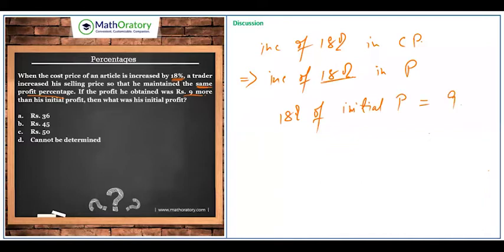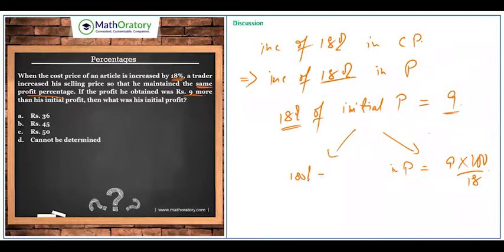So 18 percent of the initial profit equals 9 rupees. We can calculate the initial profit: 9 × 100 / 18, or mentally, 18 percent corresponds to 9 rupees, so 2 percent corresponds to 1 rupee, and 100 percent corresponds to 50 rupees. The initial profit is rupees 50.